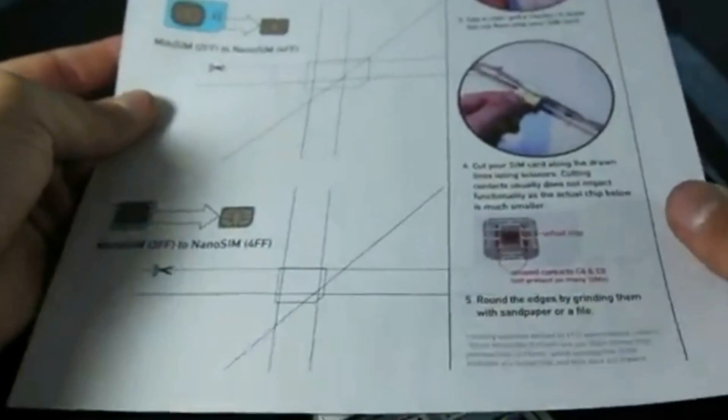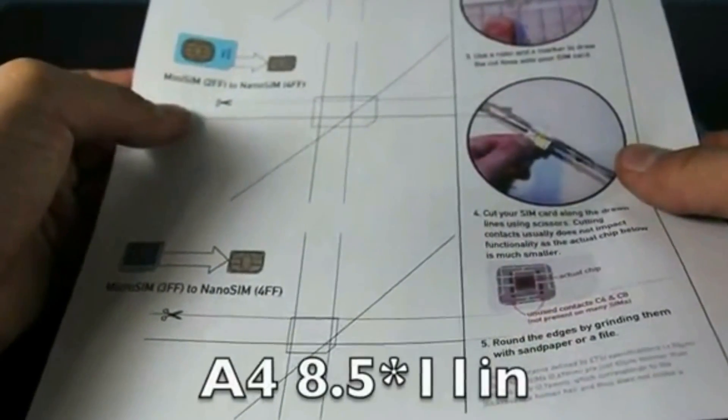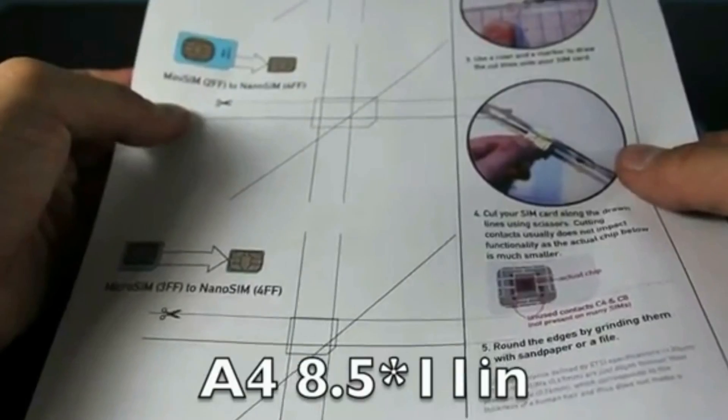There will be a link down below in the description. You'll find a link to this PDF where you can print this piece of paper, and you want to make sure it is in A4 8.5 by 11 format. Once you have that printed, set it aside.